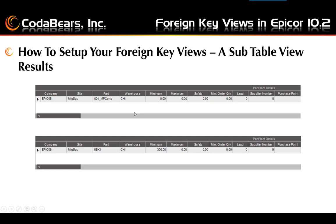Here we can see the results from two different sales order lines on the same sales order. After selecting which line we are interested in viewing, we can view all the part plant fields related to the first sales order line for part 001 MPCONS. Then we can see the part plant information for the last line on the sales order for part 0SK1. Each of these examples shows the minimum, maximum, and safety quantity for each part plant.